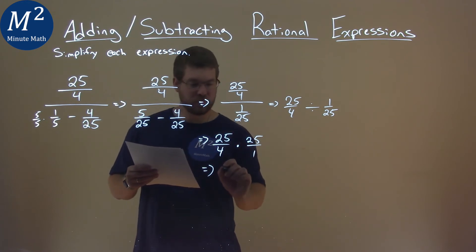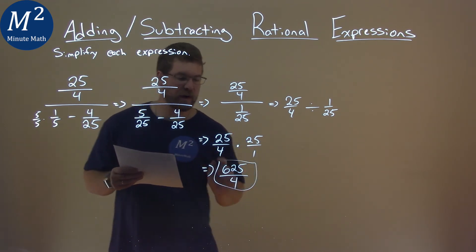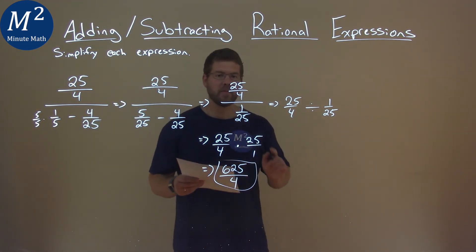25 times 25 is 625, 4 times 1 is 4, and we're basically done. Our final answer here is 625 over 4.